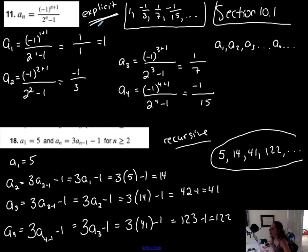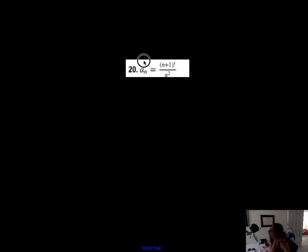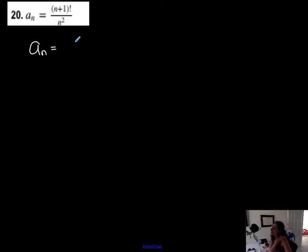Explicit form I like personally because I can find any term number that I want — all I have to do is replace n with whatever term number I want. Recursive form I need to know also because sometimes it's easier to represent a sequence in recursive form than in explicit form. There's a reason why I wanted to do this next one: I have a factorial symbol and I want you to know the factorial because you're going to see it a lot in Calc 2 and in sequences. This says: an is equal to the quantity n plus one, factorial, over n squared.